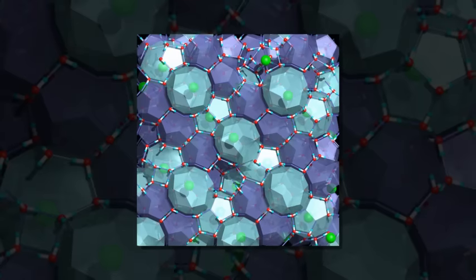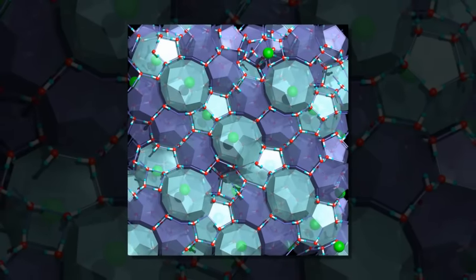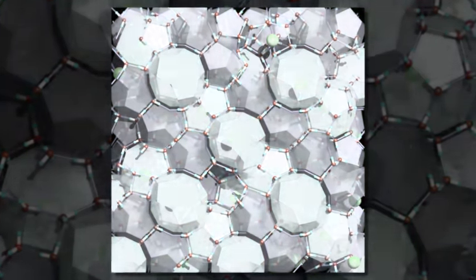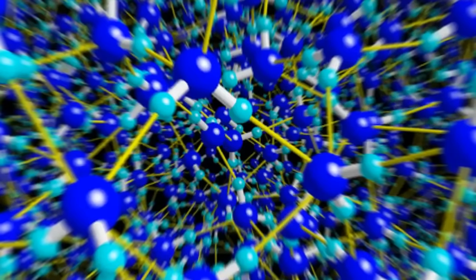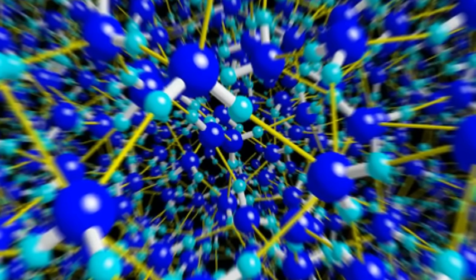The capsid comes from the bacterial virus known as bacteriophage P22. The material is potentially far less expensive and more environmentally friendly to produce than other materials currently used to create fuel cells.